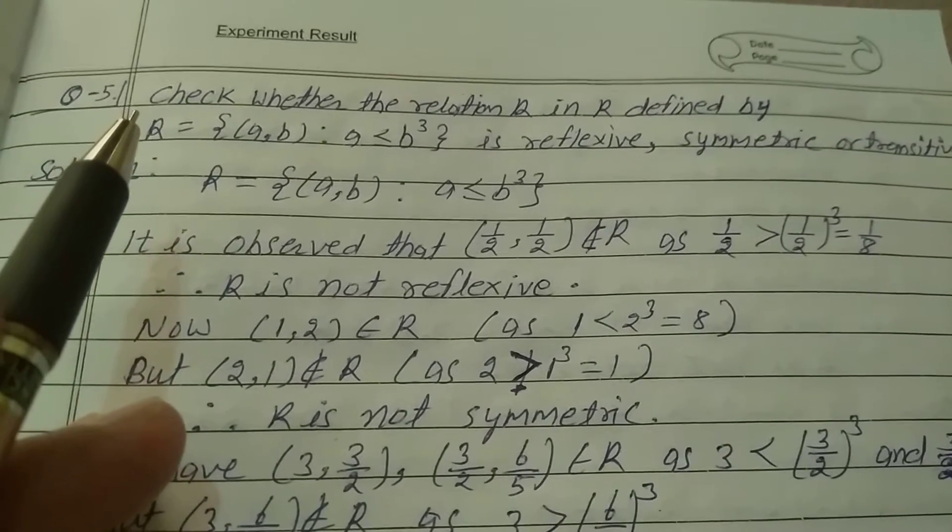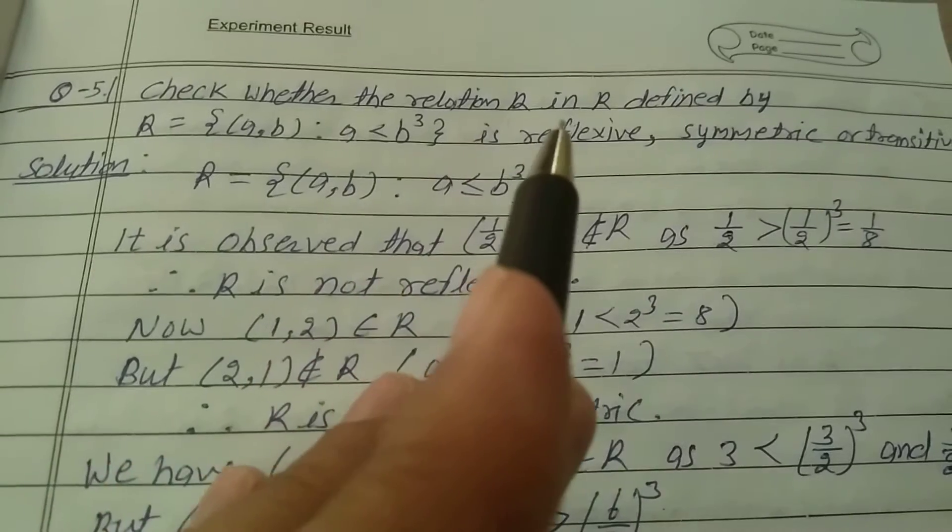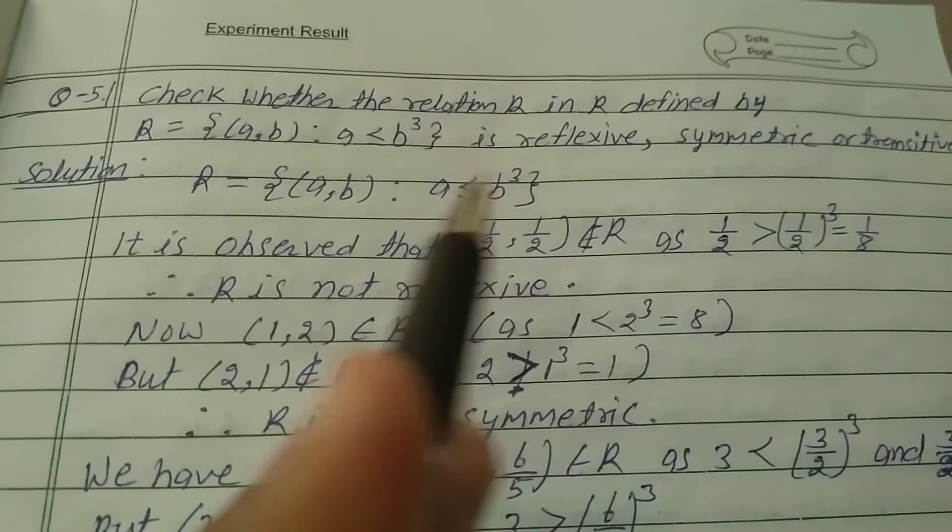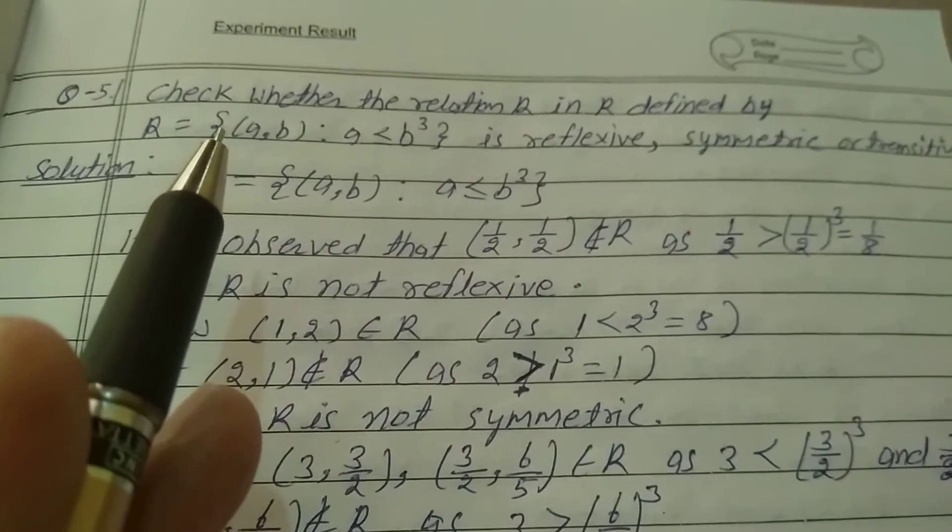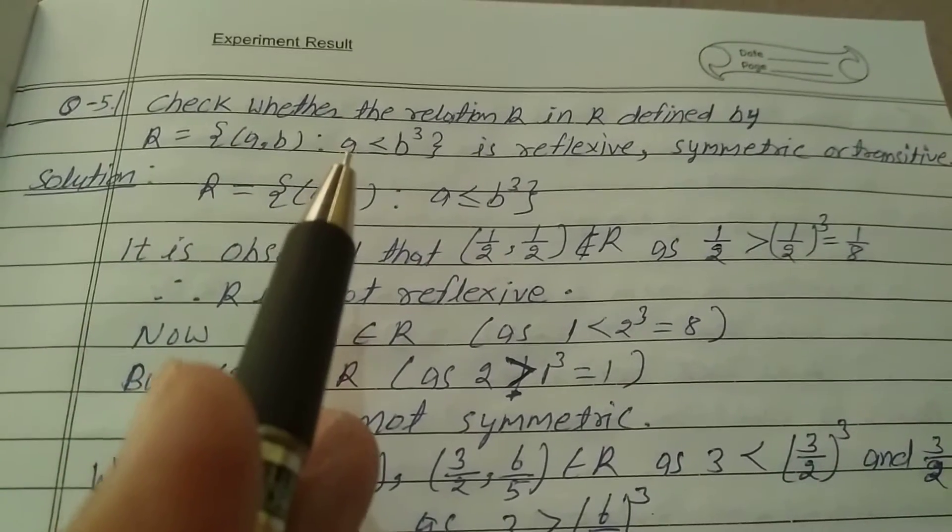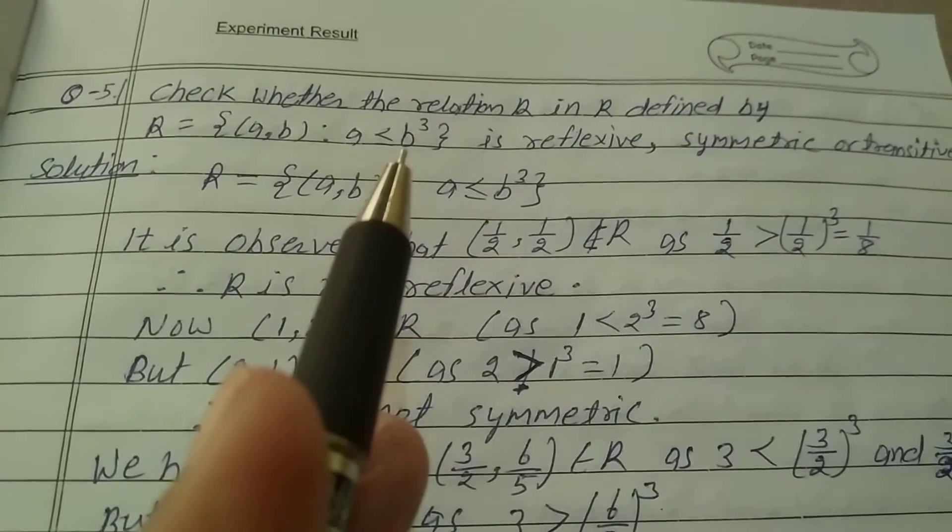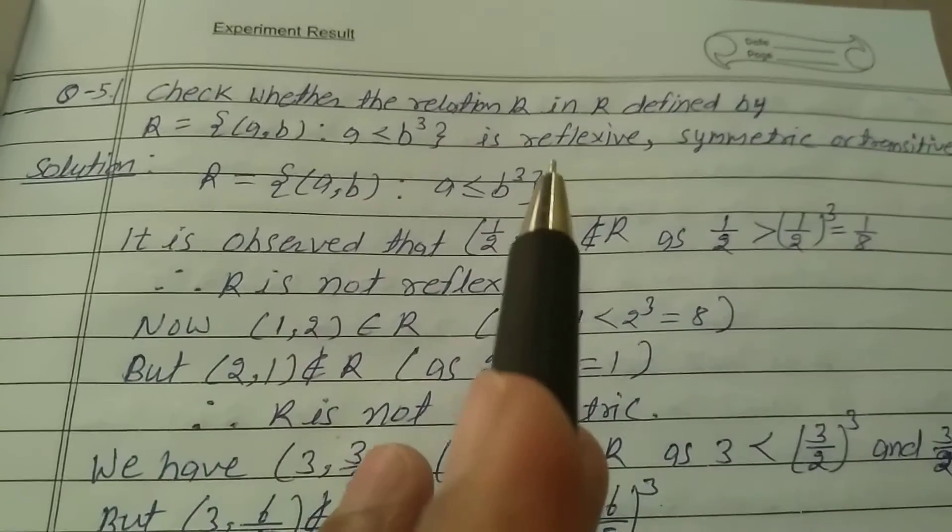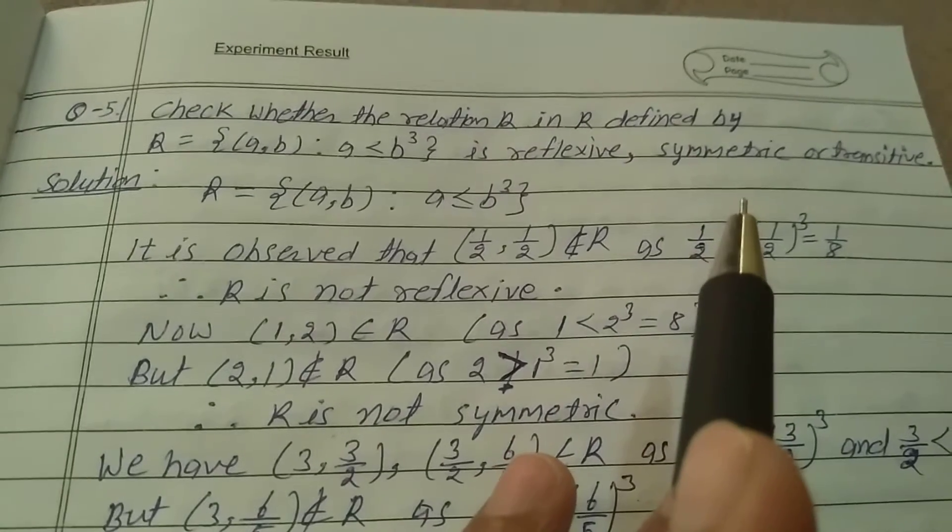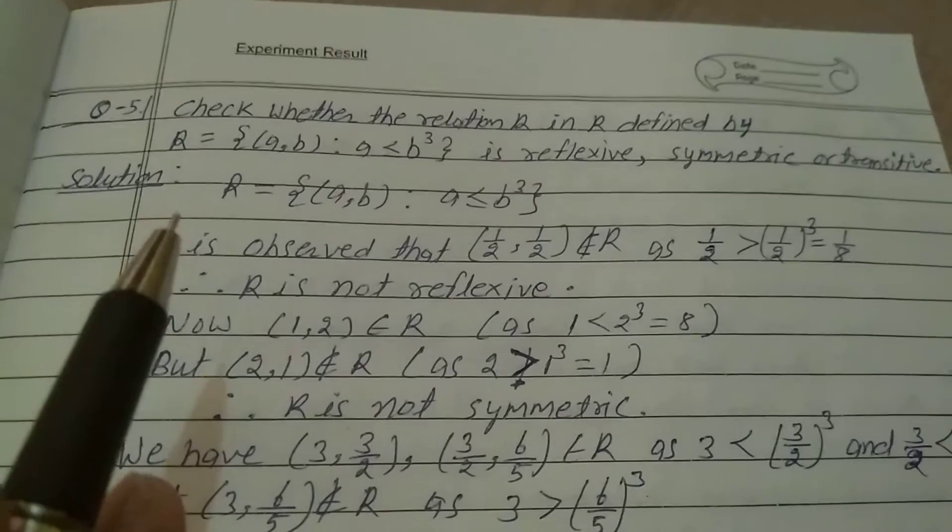Question number 5, Exercise 1.1, Class 12th. Check whether the relation R in R defined by R equals braces of (a, b) colon a is less than or equal to b cube is reflexive, symmetric, or transitive.